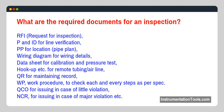What are the required documents for an inspection? RFI (request for inspection), P&ID for line verification, PP for location (pipe plan), wiring diagram for wiring details, data sheet for calibration and pressure test, hookup, remote tubing airline, QR for maintaining records, WP (work procedure) to check each and every step as per spec, QCO for issuing in case of a minor violation, NCR for issuing in case of a major violation, etc.